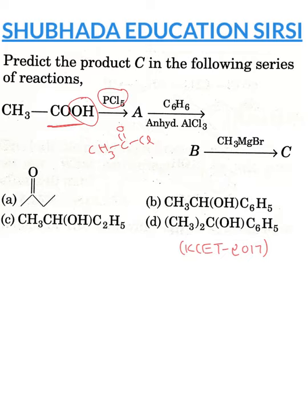CH3COCl plus benzene and AlCl3. This gives acetophenone as product B.